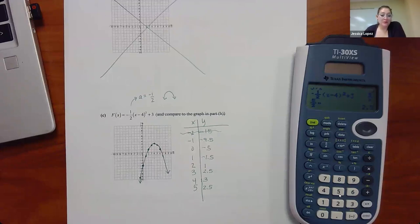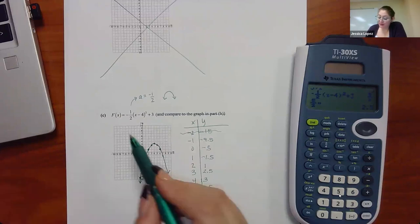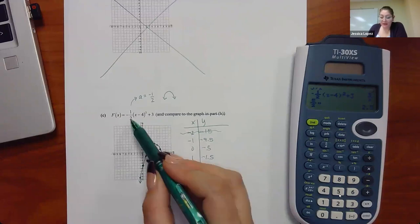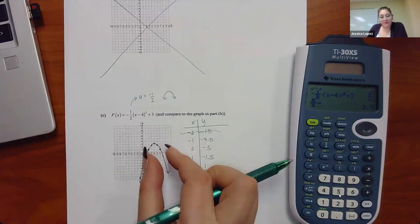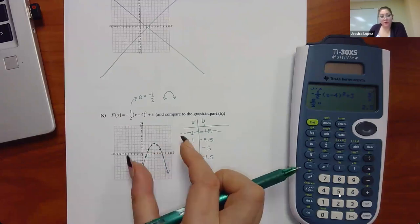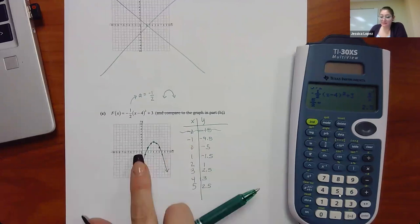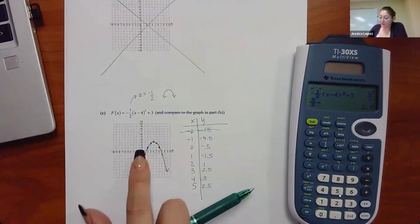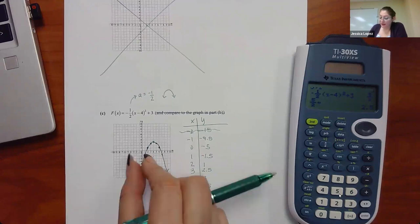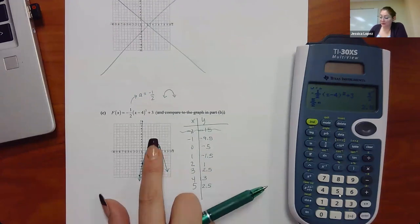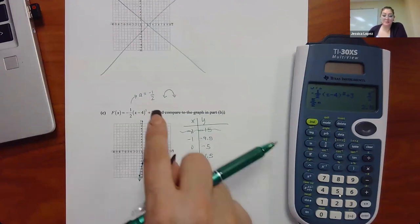We've graphed both. Notice that the negative a made it flip downward. The one-half made it a little wider than a regular x squared. The minus 4 moved it to the right because the vertex is supposed to be at x = 4, and the plus 3 moved it up three.